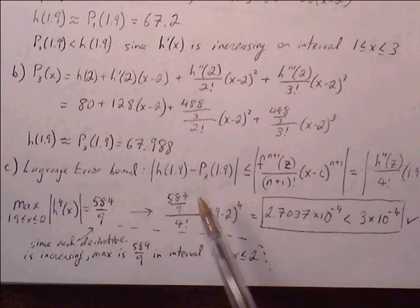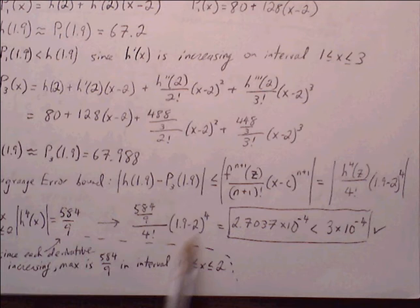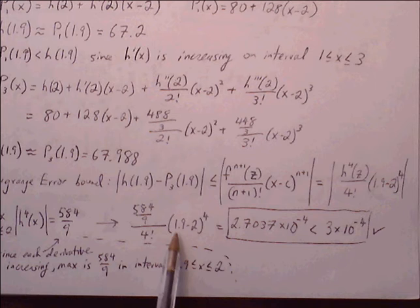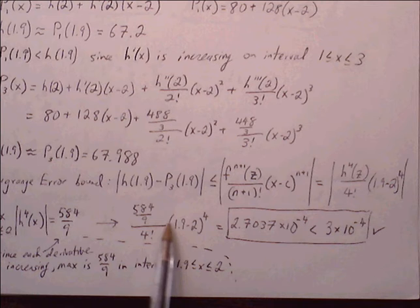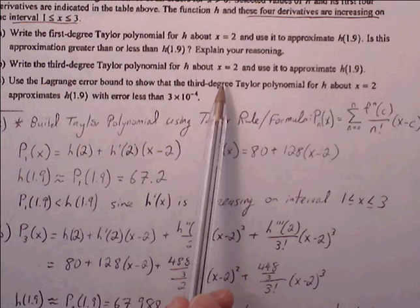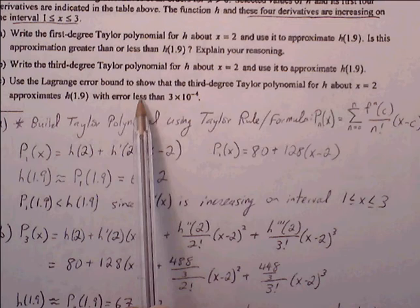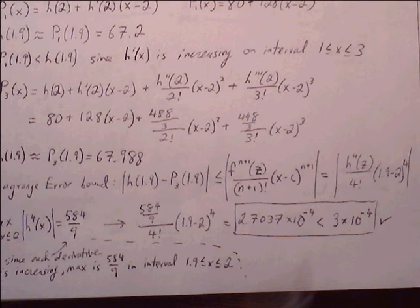Replacing the fourth derivative at z with 584 over 9, we compute (584/9) divided by 4 factorial times (1.9 minus 2) to the fourth. The maximum error comes out to 2.7 times 10 to the negative 4, which is less than 3 times 10 to the negative 4. This confirms the third degree Taylor polynomial approximates h of 1.9 with error less than 3 times 10 to the negative 4.